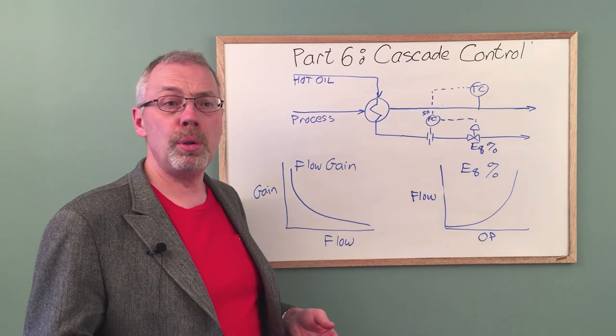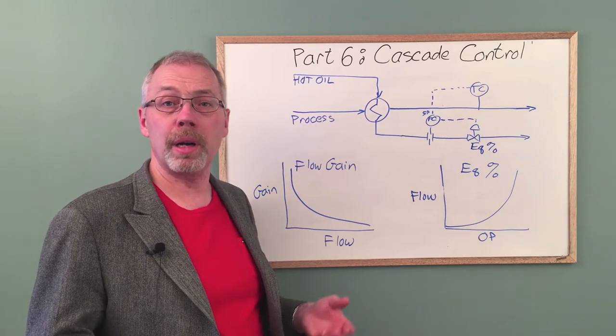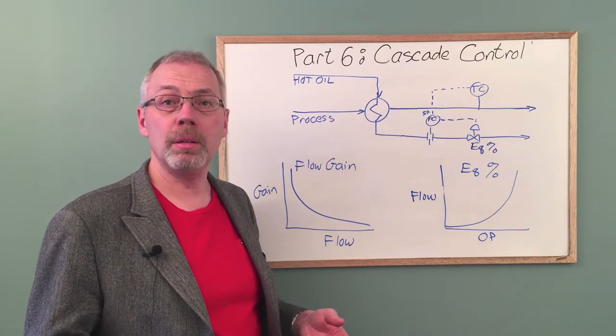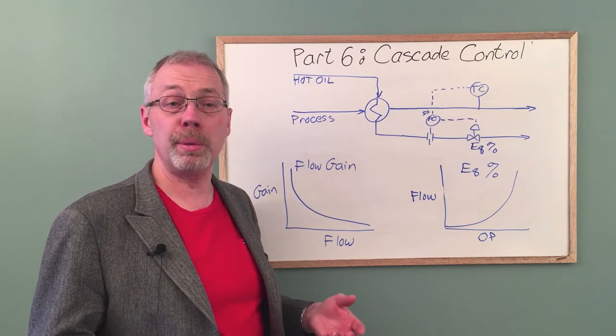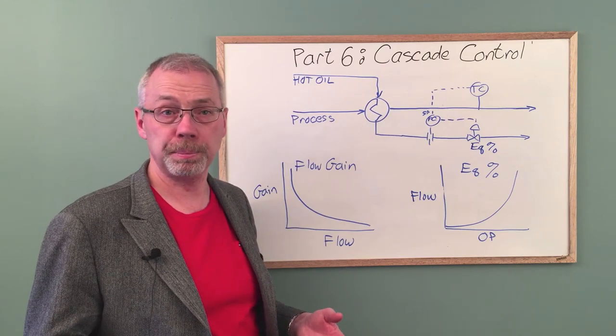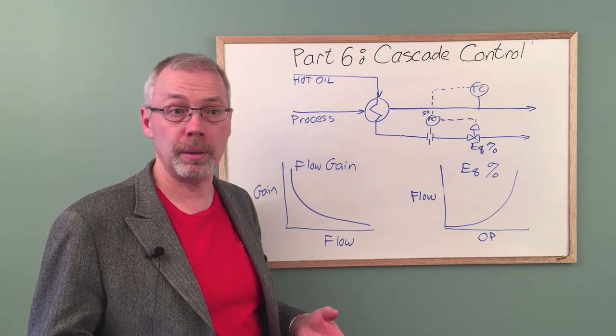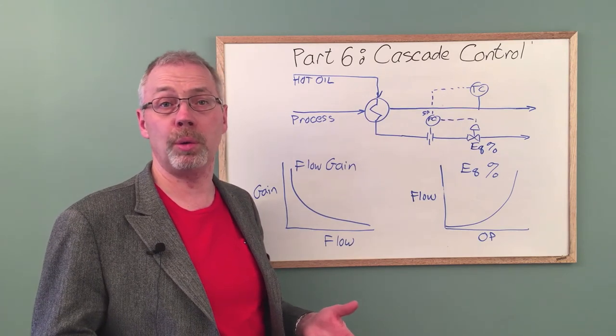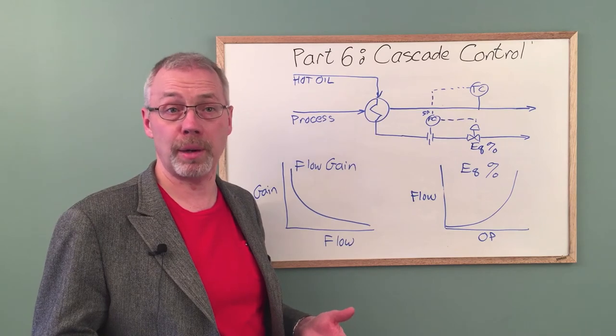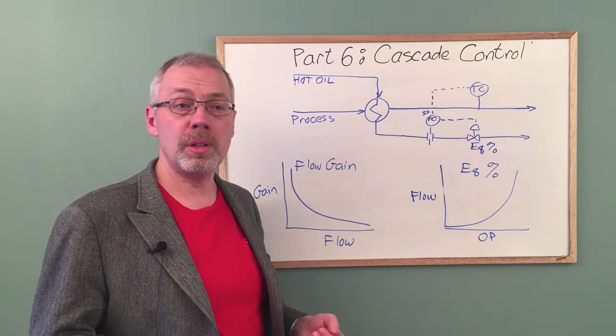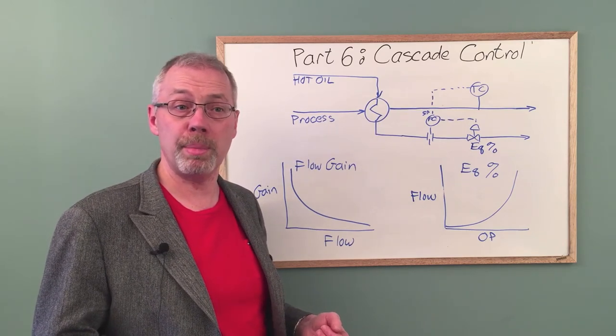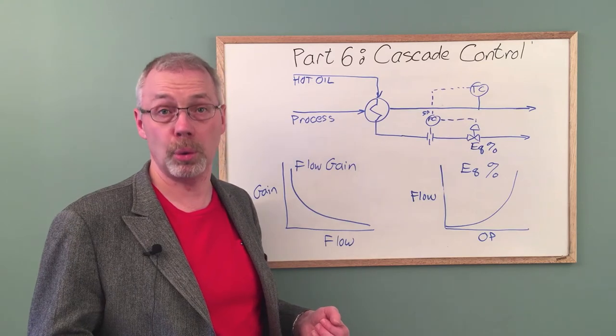We will tune the controllers to work well together at normal rates. Then the process flow rate will be reduced by a factor of three. This will cause the gain on the heat exchanger to increase by a factor of three and the gain on the flow control valve to decrease by a factor of three. Let's see how a reduction in flow rate impacts the reliability of this control loop.